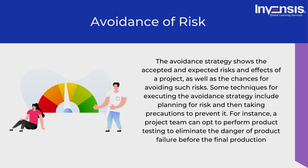The second risk mitigation strategy is avoidance of risk. The avoidance strategy addresses the accepted and expected risks and effects of a project, as well as the chances of avoiding such risks. Techniques include planning for risk and then taking precautions to prevent it — for instance, a project team can opt to perform product testing to eliminate the danger of product failure before final production.